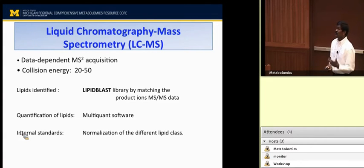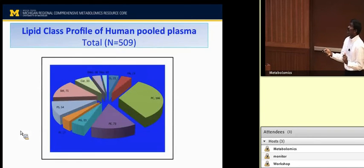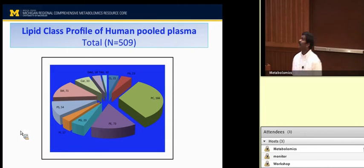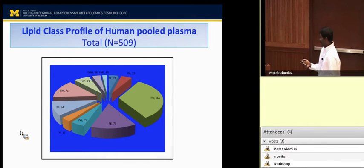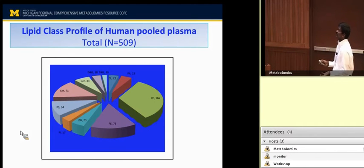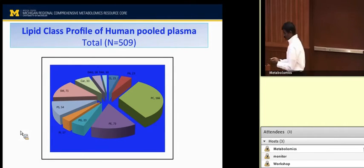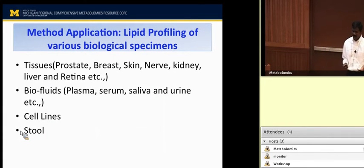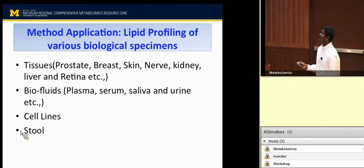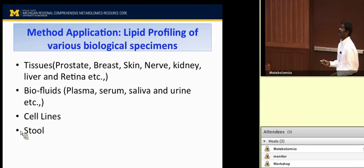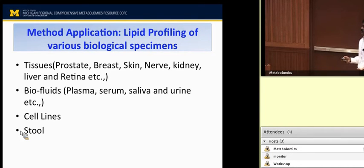Using our established method, we have identified more than 500 lipids, which include glycerolipids like diglycerides and triglycerides, sphingolipids like sphingomyelin and ceramide, and phospholipids including PC, PE, PG, PS, cardiolipin, and PA. After establishing the method, we have been successfully running the following sample types for clients: tissues including prostate, breast, skin, nerve, kidney, liver, and retina; biofluids like plasma, serum, saliva, and urine; cell lines from different diseases; and also stool samples.